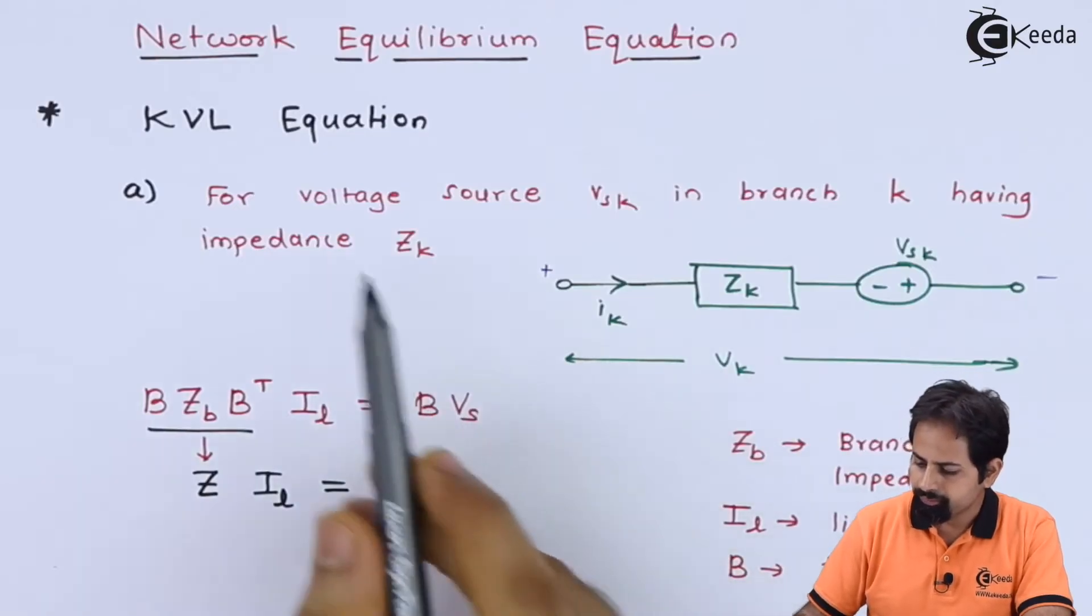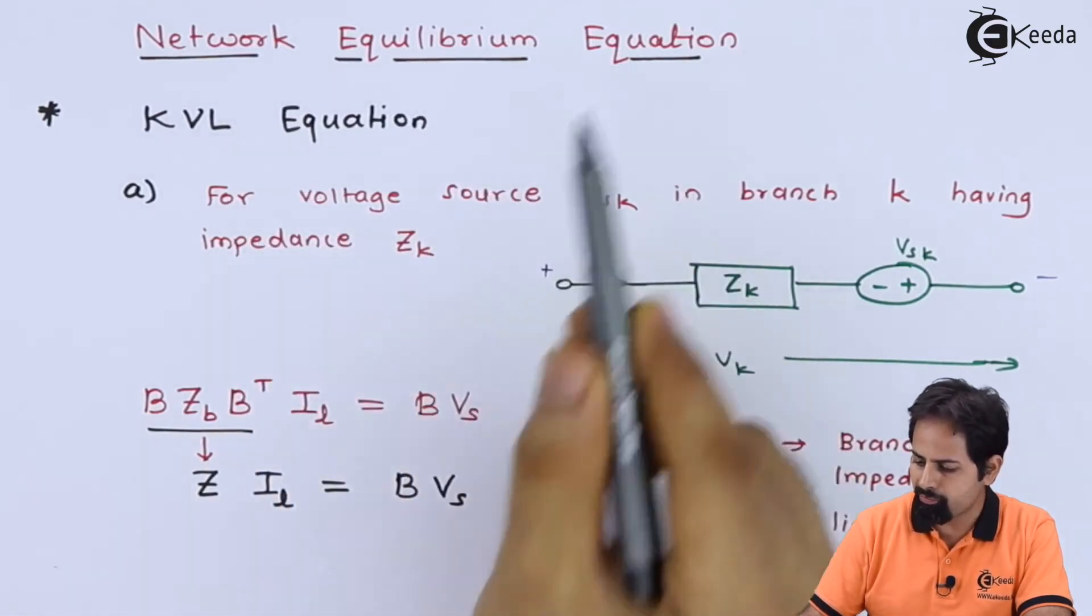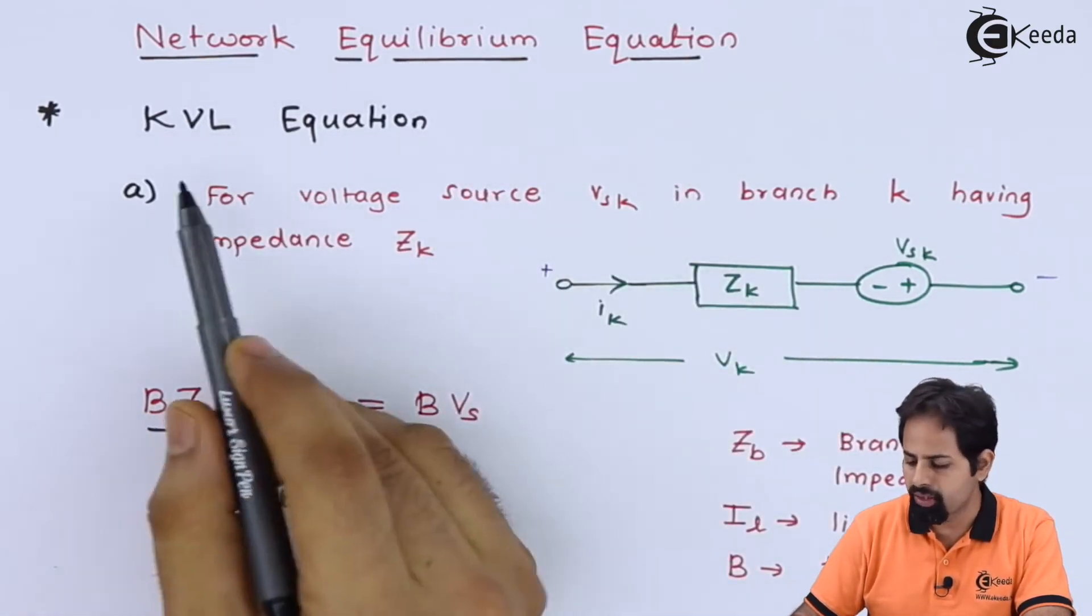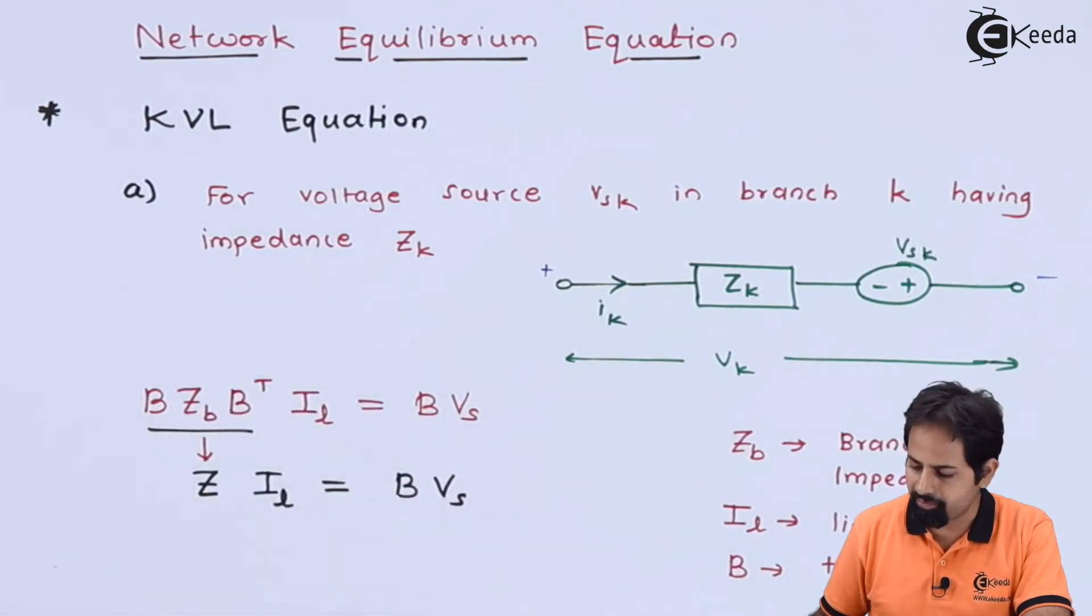So here you can see under the heading network equilibrium equation there are two parts: one is KVL equation, another one is KCL equation.